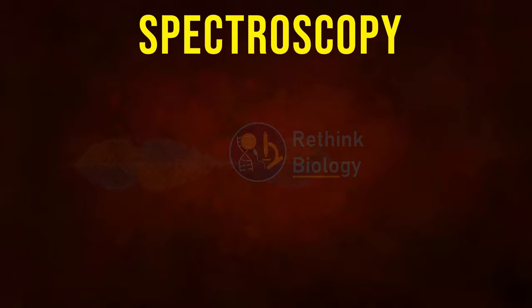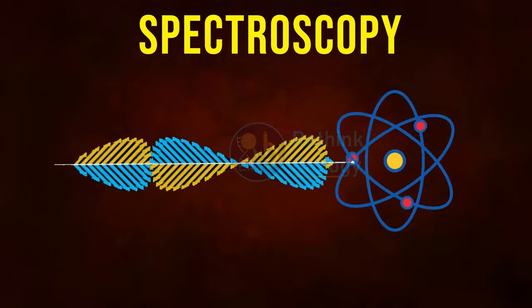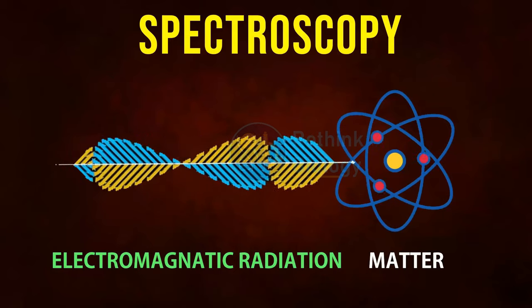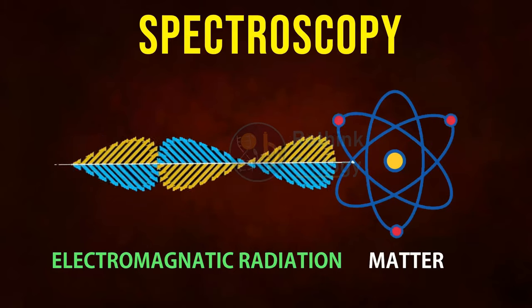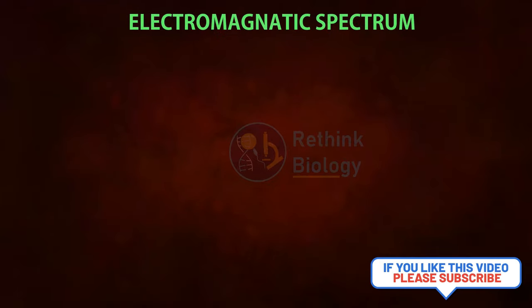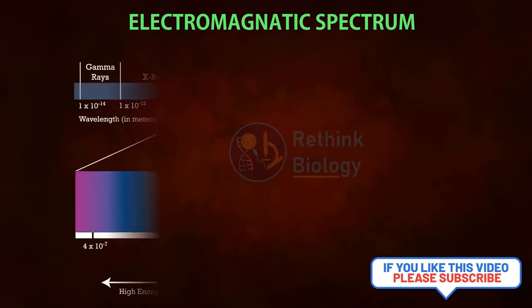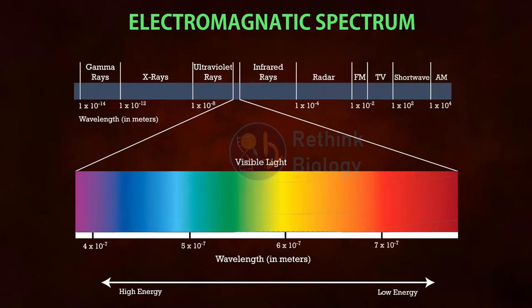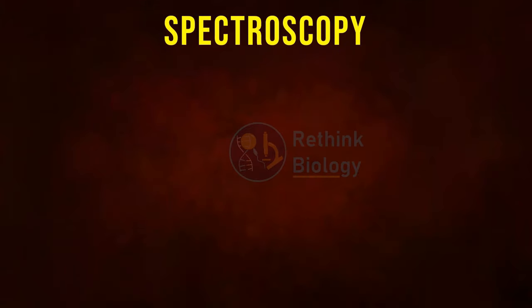Spectroscopy is the study of the interaction between electromagnetic radiation and matter. This matter can be any atoms, molecules, or ions. The electromagnetic spectrum ranges from very short wavelengths like gamma rays to long wavelengths such as radio waves. The visible range is approximately 400 to 700 nanometers.